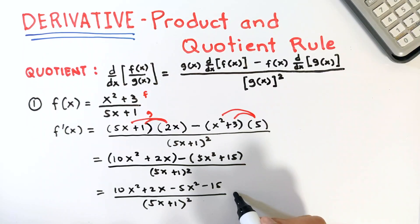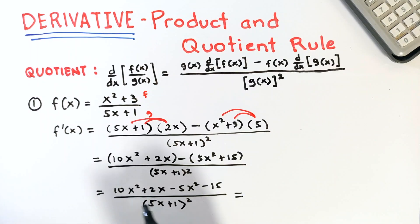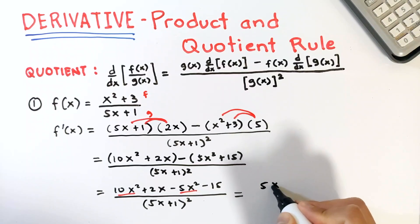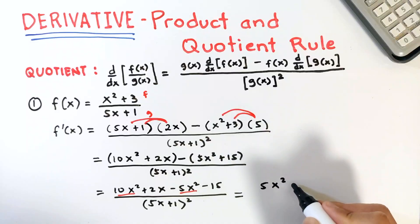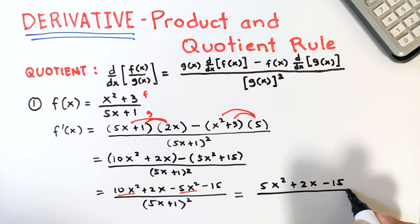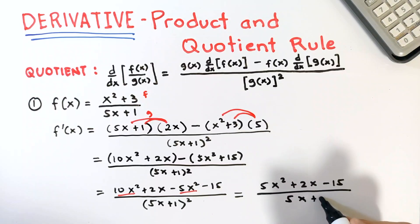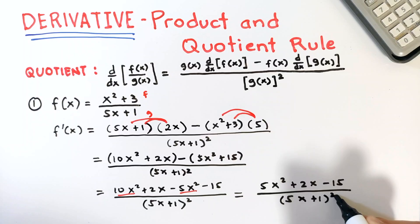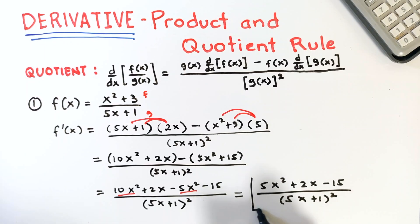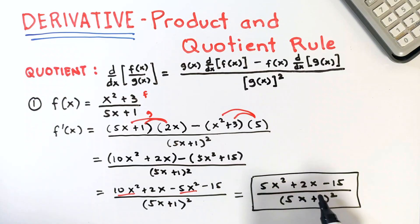So now, combining like terms: 10x squared minus 5x squared is 5x squared. Then copy 2x, copy minus 15, and copy the denominator. Since the numerator is not factorable, this is our final answer — we cannot simplify it further. So the answer is 5x squared plus 2x minus 15, over 5x plus 1 squared.